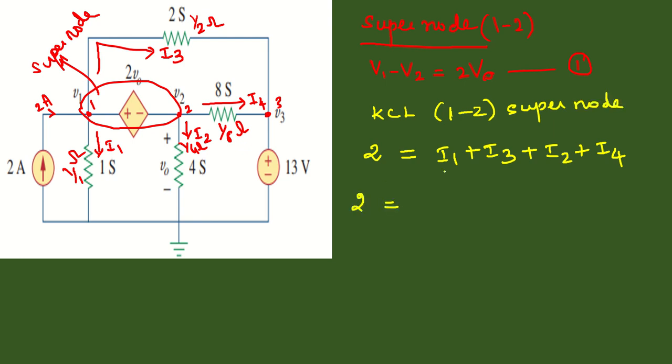Now let's apply Ohm's law to I1, I2, I3, and I4. I1 is V1 minus 0 (reference node) divided by 1 ohm. I3 is V1 minus V3 divided by 1/2. I2 is V2 divided by 1/4. I4 is V2 minus V3 divided by 1/8.